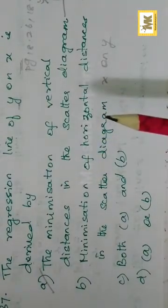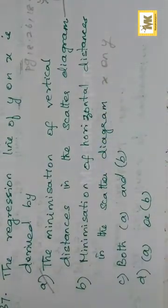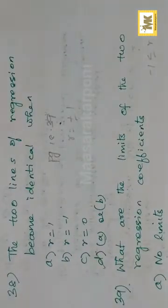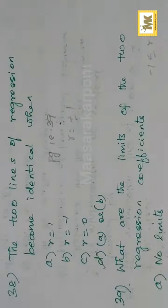Both lines become identical when r is equal to plus or minus 1. So the answer is D — A or B.